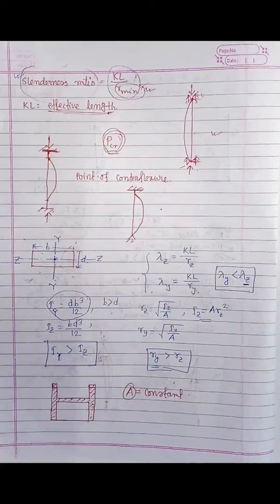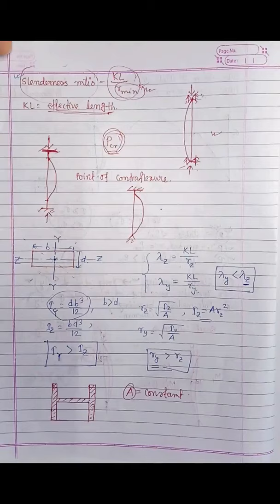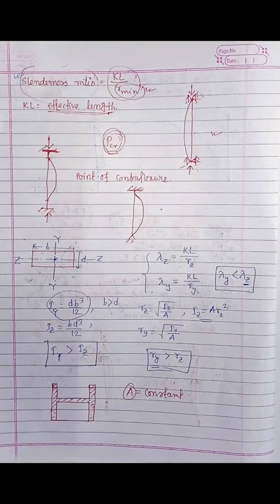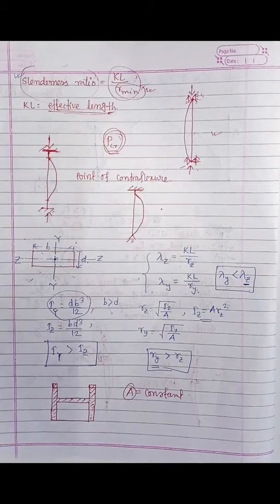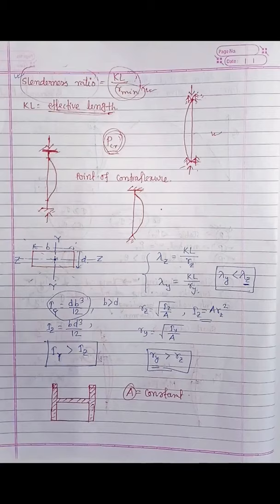In the market there are ready-made sections available for use as compression members. Every such section has some fixed radius of gyration. We can only change the effective length by providing different support conditions. For standard sections, the radius of gyration is fixed.